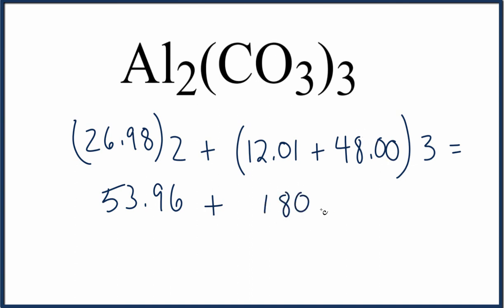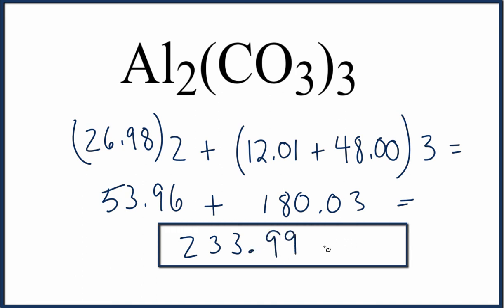That gives us 180.03. And then when we add these two numbers together, we get 233.99. And it's important we use our units grams per mole here. And that is the molar mass of Al₂(CO₃)₃ aluminum carbonate.